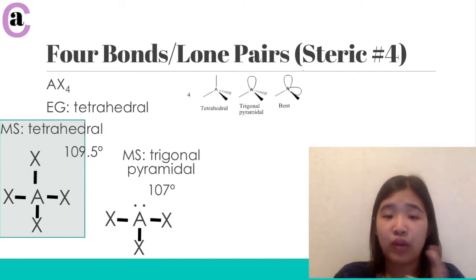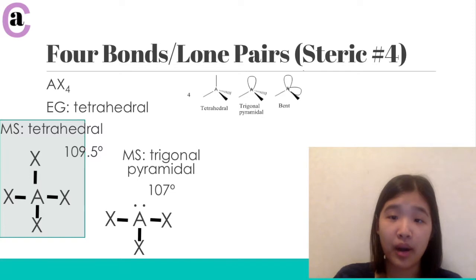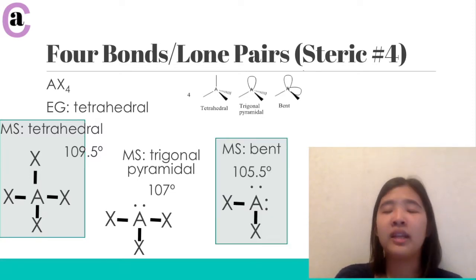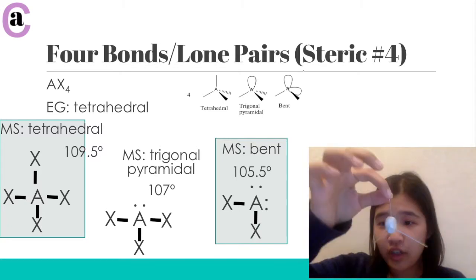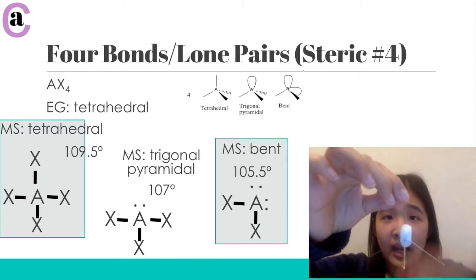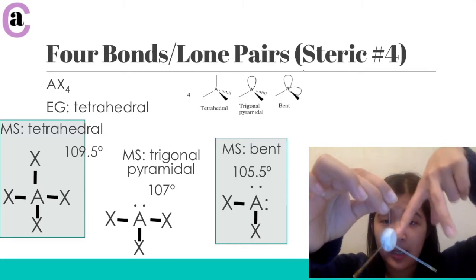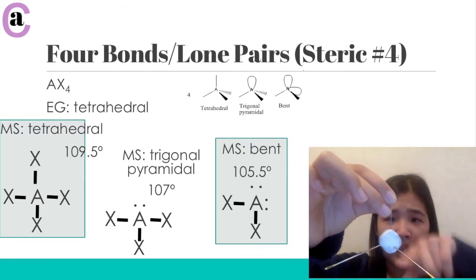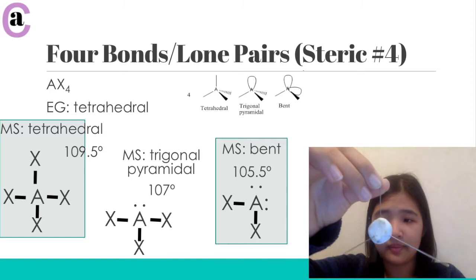If we have one lone pair, the molecular shape becomes trigonal pyramidal. Because the lone electron pair needs a little more room, you have a slightly smaller angle between the remaining bonds. With two lone pairs, you get an even smaller angle and a bent configuration — similar to what we saw with steric number three. The model looks like a three-legged pyramid with something coming out on all sides.